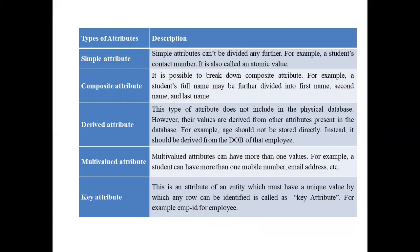A composite attribute is one which can be divided into sub-parts. For example, a student or employee name can be represented as first name, middle name, and last name — so this is a composite attribute. A derived attribute is one whose value can be derived from the value of a related stored attribute. For example, the age of an employee can be calculated from the date of birth, or the service period can be calculated from the date of joining. These are derived attributes.